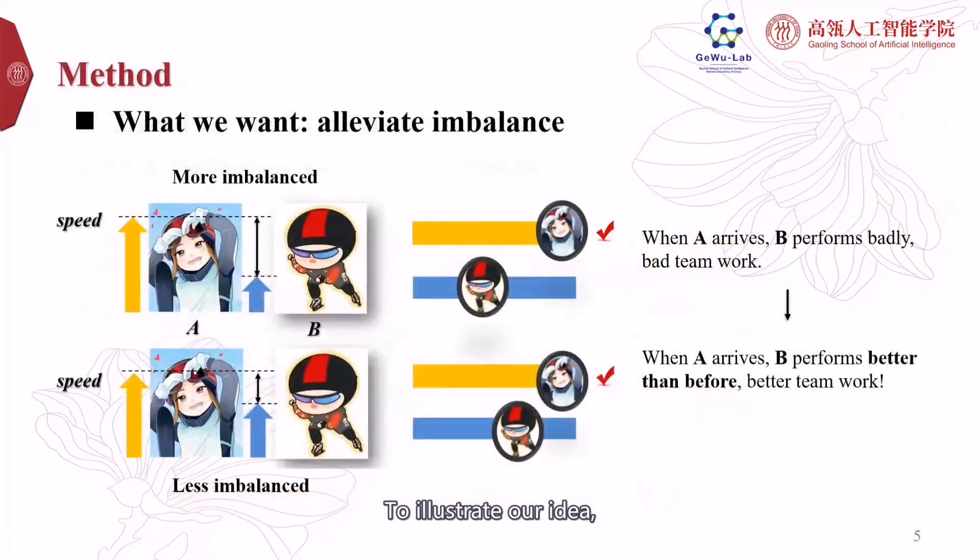To illustrate our idea, we'll give an example. Imagine a relay competition—the score of a team depends on the last teammate. Now we have two teammates: A is faster than B.